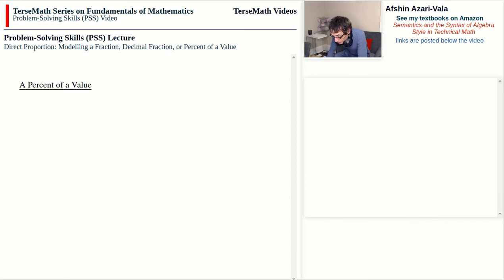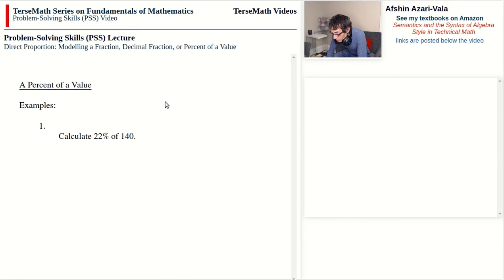The next kind of problem is finding a percent of a value. For example, 22% of 140. We need to understand that 22% of 140 means 140 should be divided into 100 parts, and then we take 22 parts. Similar to the previous cases, we can solve this by multiplying 22% by 140. A percent means out of 100, implying division by 100.